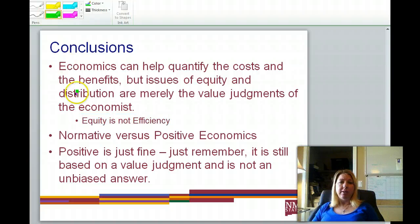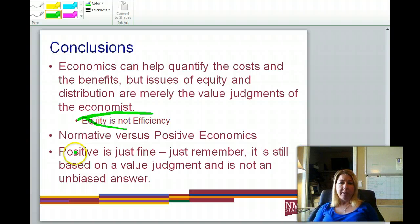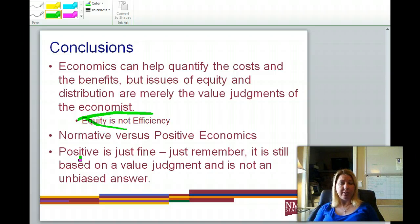While a market economy ensures the greatest availability of the economic pie, it says nothing about how the pie is sliced. You can have 400 people with 95% of the pie while 400 million people fight over the remaining 5%. Economics can help quantify costs and benefits, but issues of equity and distribution are value judgments. Equity is not the same as efficiency, and this is where we get into the difference between normative and positive economics. I hope you've enjoyed the video lecture series — thank you very much.